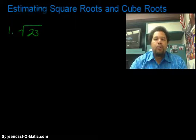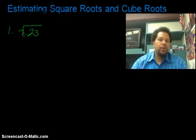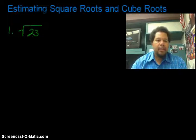Okay, estimating square roots and cube roots. Let's start off with this first example. We want to find the square root of 23. The first thing that comes to mind is I notice that 23 is not a perfect square number. Therefore, I know that the square root of this is not going to be an integer.